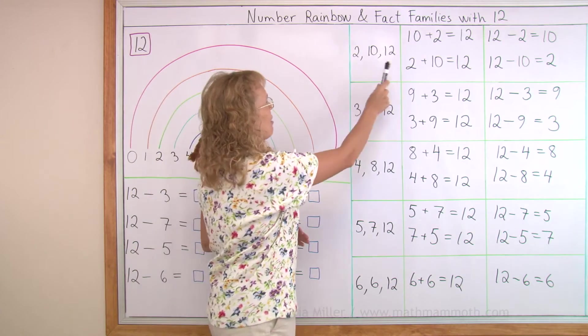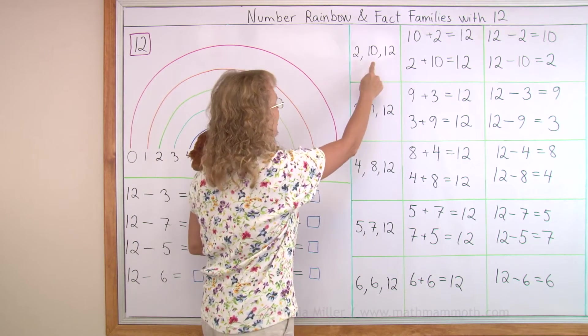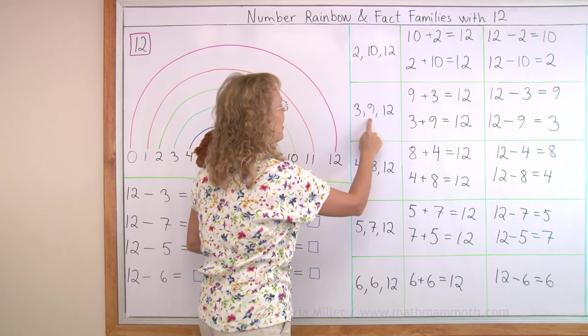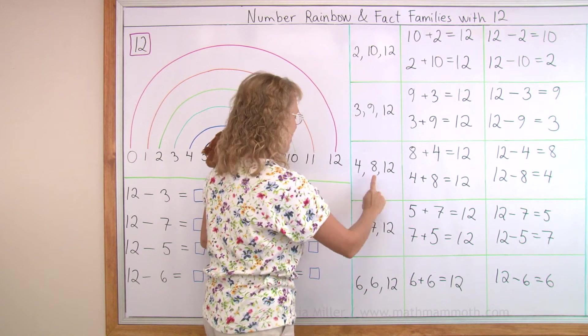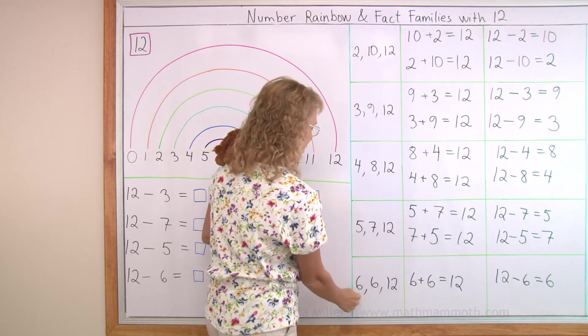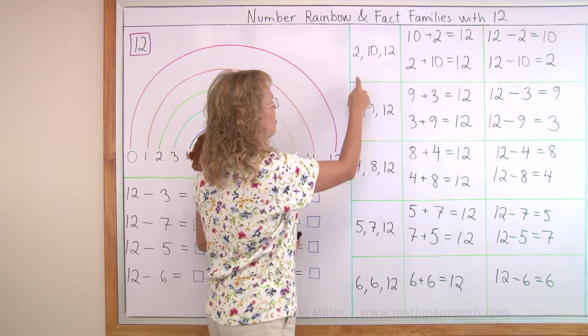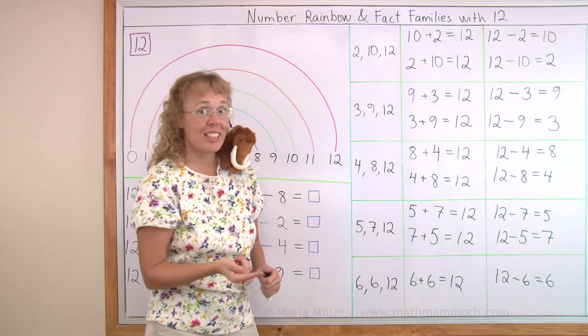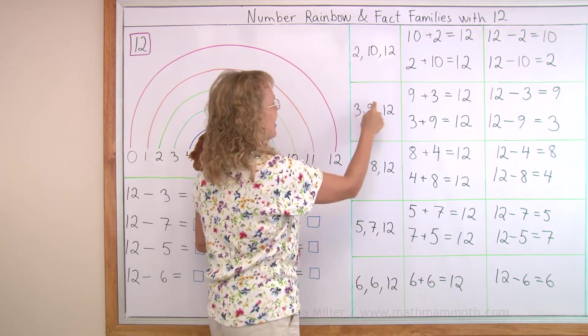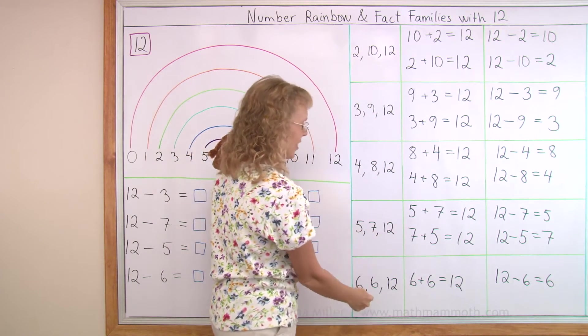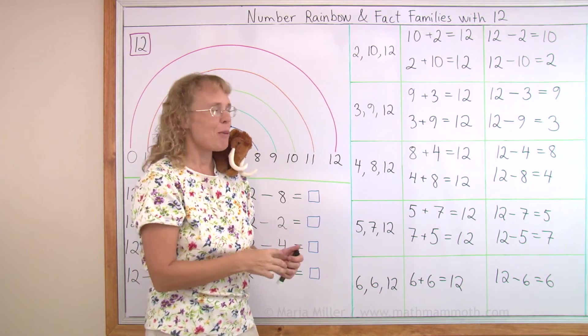Let's review these numbers here that make 12. 2 and 10, 3 and 9, 4 and 8, 5 and 7, and 6 and 6. Notice that they come in a pattern. We have 2, 3, 4, 5, 6 increasing by ones. And then 10, 9, 8, 7, 6 are decreasing or going down by ones.